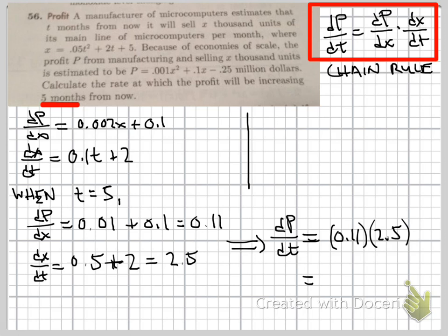This seems like a small amount, but this is 0.275 million dollars per month. So it's not a small amount of money—it's $275,000 per month.